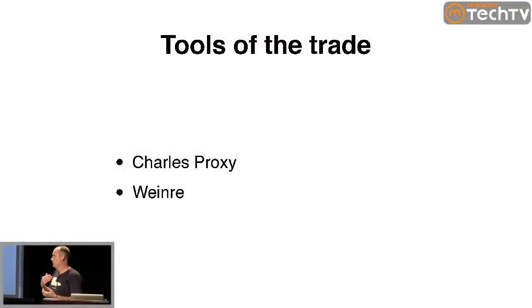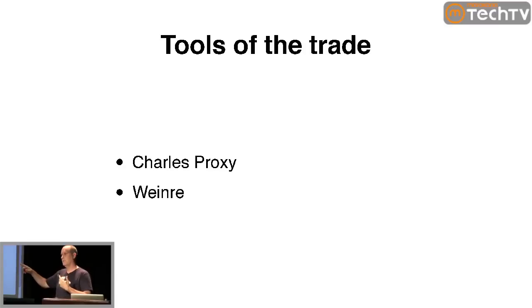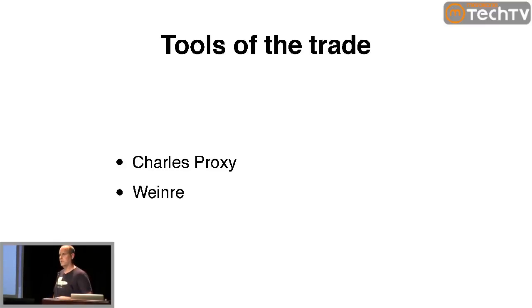Tools of the trade — debugging web stuff in this kind of mobile app environment can be challenging. One tool we use is Charles Proxy. It's basically a web proxy that runs on your local machine, and you can run all your web traffic through it. You can redirect traffic — we redirect our traffic to development servers — and you can watch the traffic go back and forth, see what request headers were sent, see what the response was, and inspect all this stuff as long as it's not encrypted. It's invaluable for seeing exactly what the device received and whether there was an error on the server.